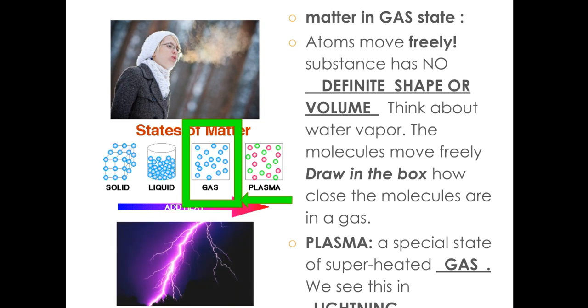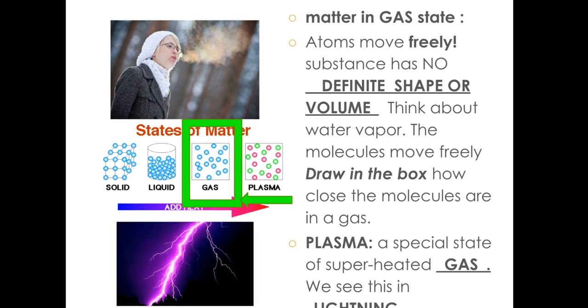And last but not least, we have a very special fourth state of matter. This fourth state of matter is called plasma. It is a special case of superheated gas. This is what we see in lightning. When lightning strikes, the gas is superheated and it creates plasma. So this is a very rare state of matter, but it still exists.